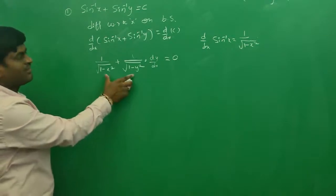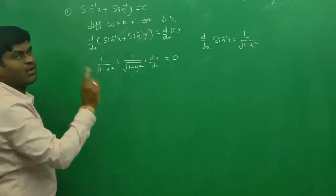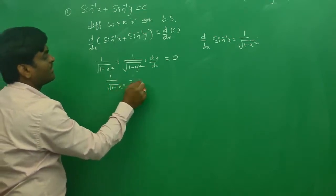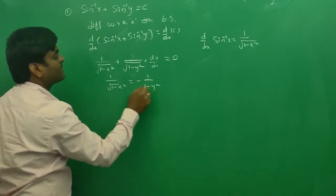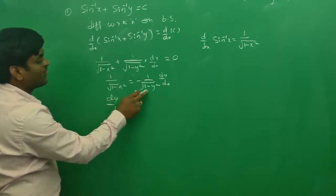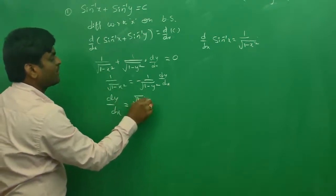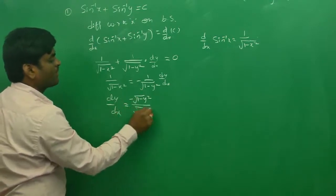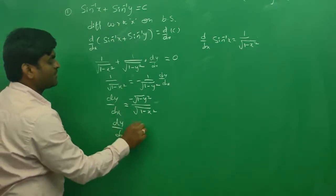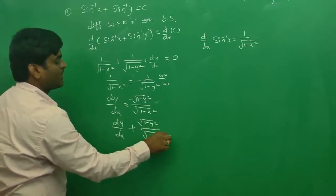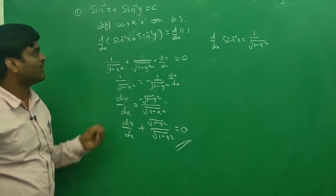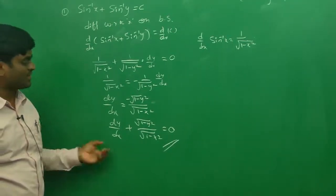This is already the required differential equation because it is a first-order differential equation without any arbitrary constant. You can simplify: 1/√(1 − x²) = −1/√(1 − y²) · dy/dx. Cross-multiplying gives dy/dx = −√(1 − y²)/√(1 − x²). Taking everything to the left side: dy/dx + √(1 − y²)/√(1 − x²) = 0. This is the required differential equation of the family of curves sin⁻¹x + sin⁻¹y = c.